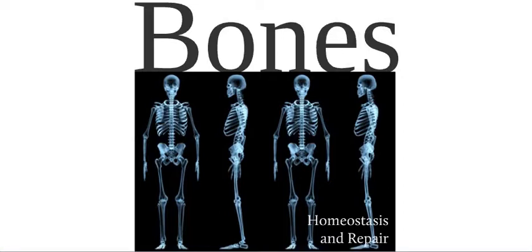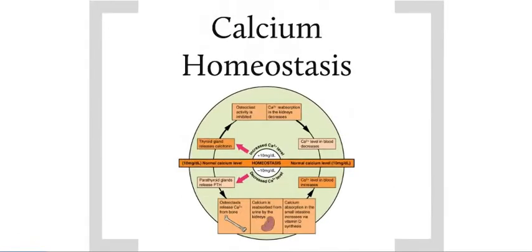This section from the chapter on bone tissue and the skeletal system will concentrate on the homeostasis of calcium and how broken bones repair themselves. In the last couple of sections, we've been discussing growth processes, and calcium homeostasis is really an extension of that. The levels of calcium in the blood are regulated by hormones that help build up or break down bone matrix, both of which processes are taking place during growth, such as appositional growth.